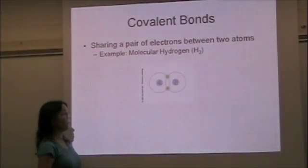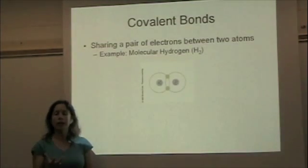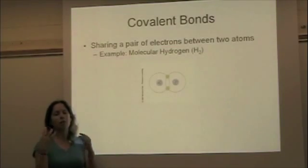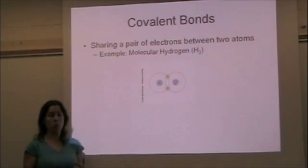An example of a covalent bond is hydrogen. The reason why these covalent bonds are forming is to try to create a full outer shell for both atoms, because that's what makes them most stable.